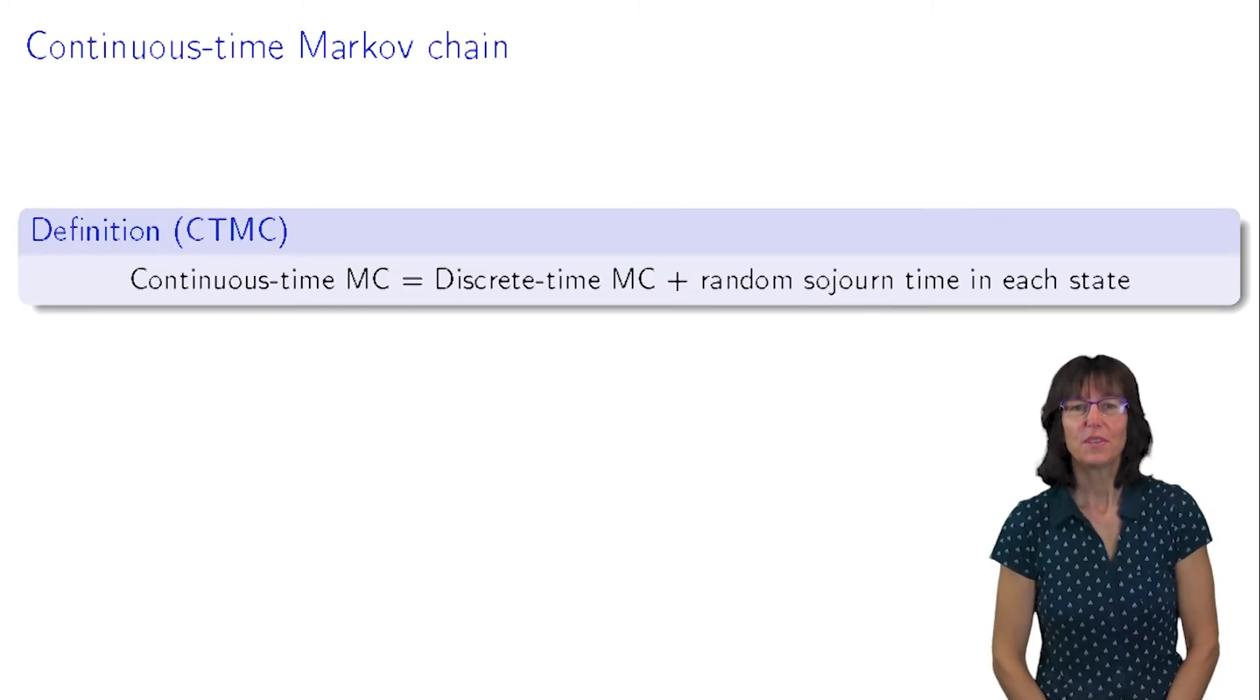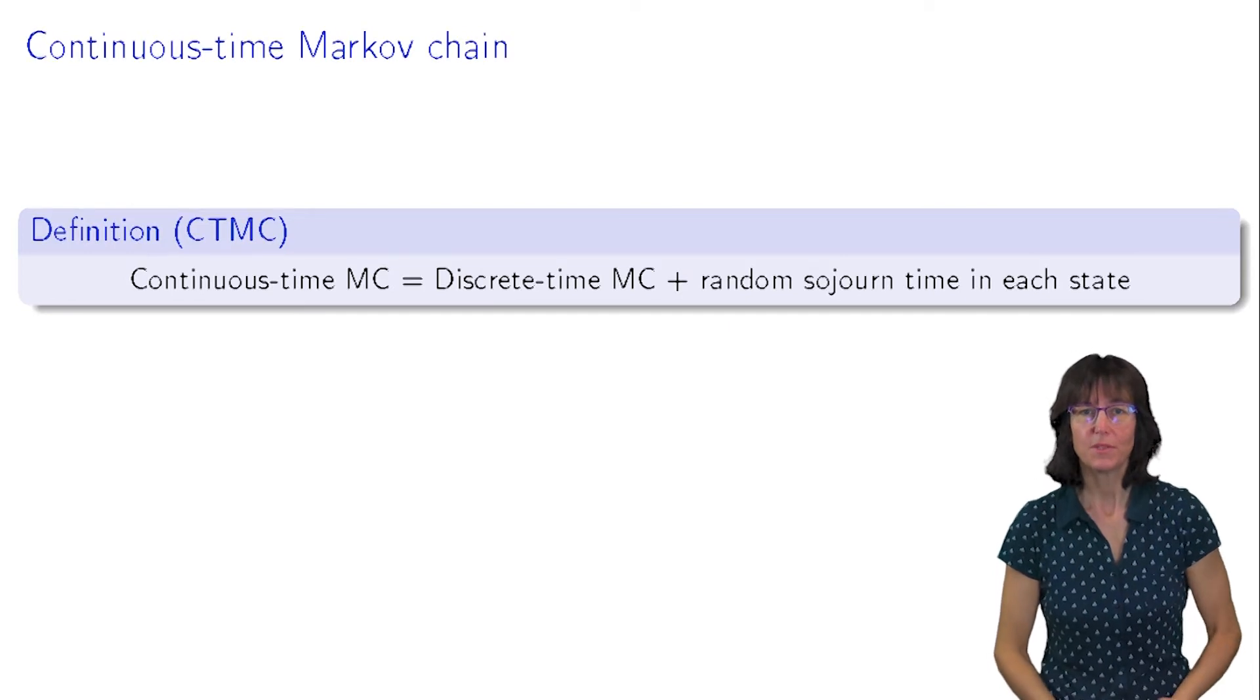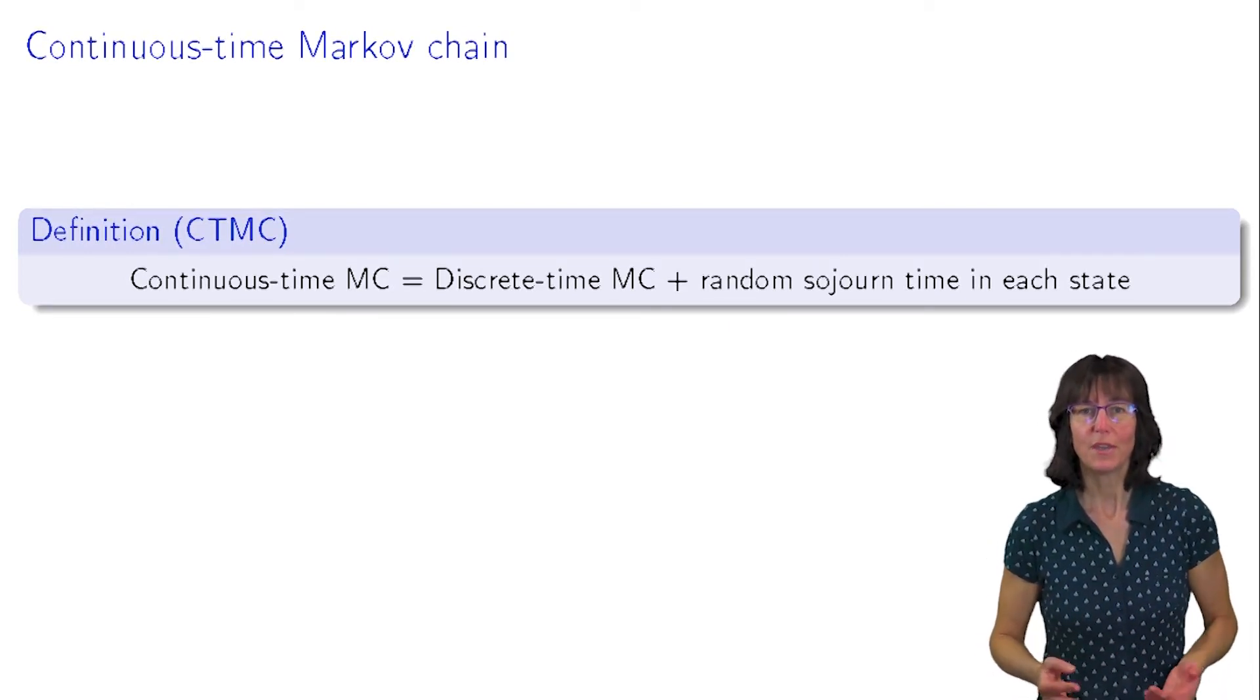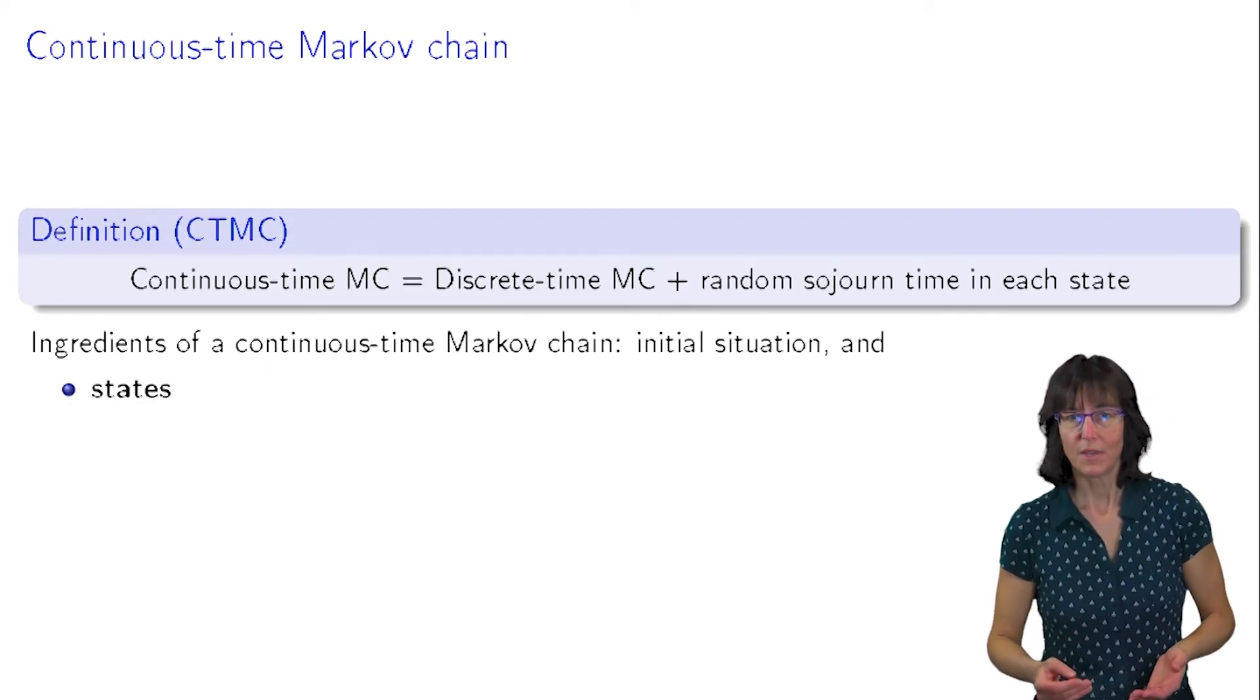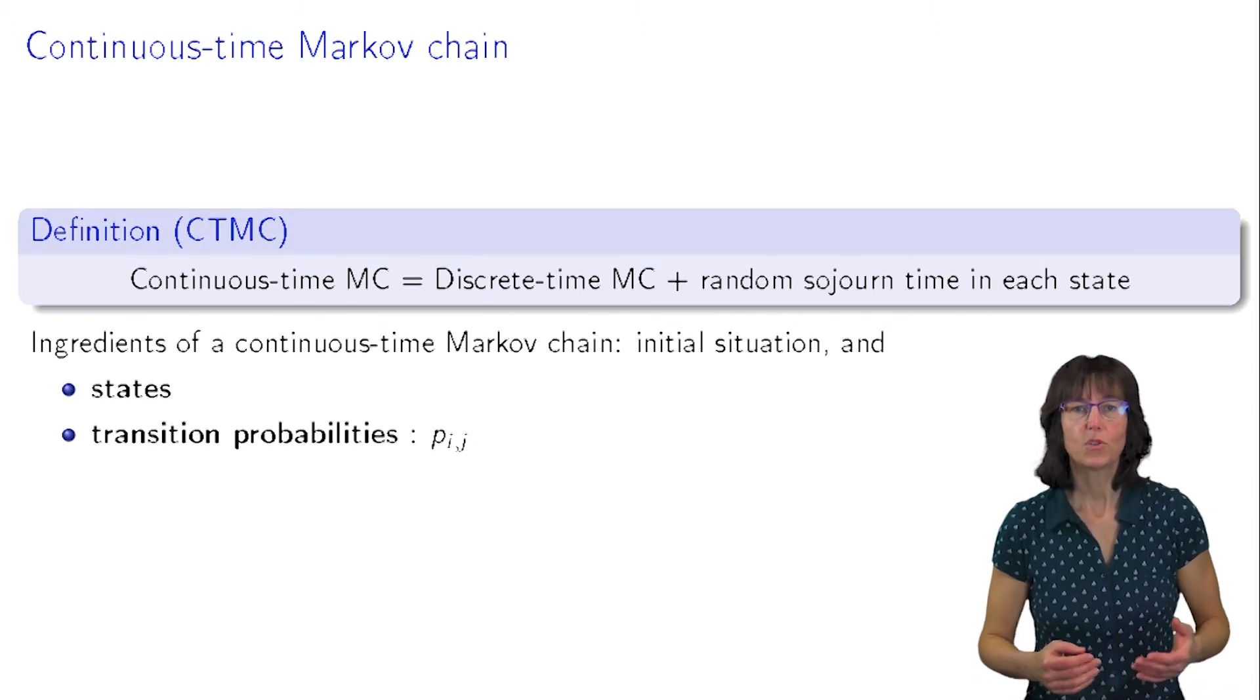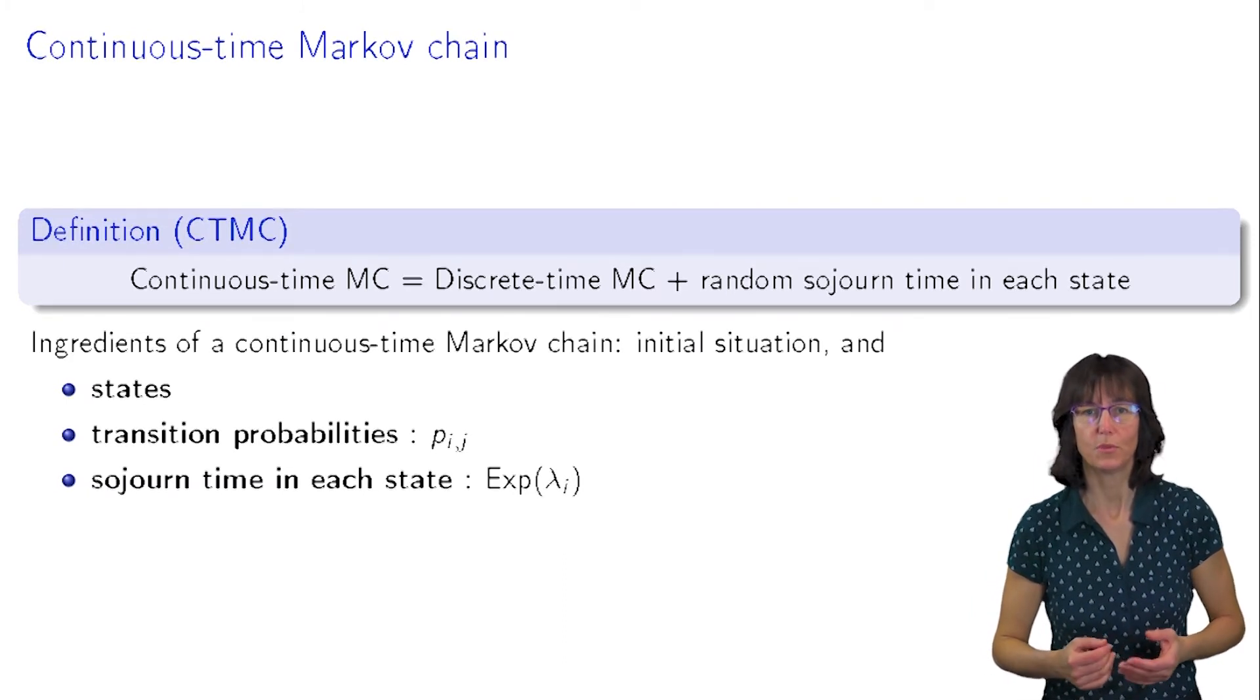This week is devoted to continuous time Markov chains. These stochastic processes are the combination of a discrete time Markov chain and a random sojourn time. Namely, we have as before a state space, the transition probabilities p_{ij}, to which we add random sojourn times which are supposed to be exponentially distributed.